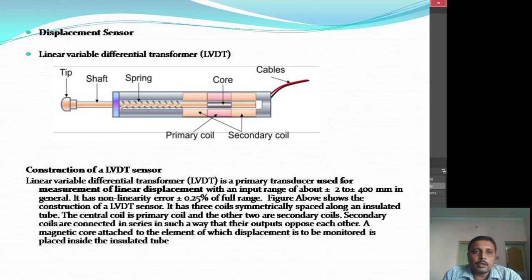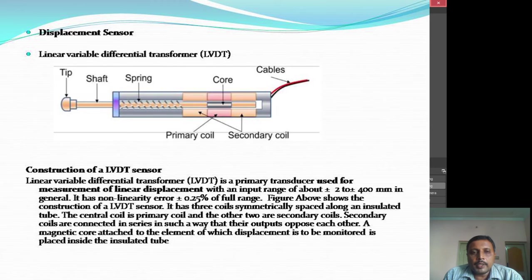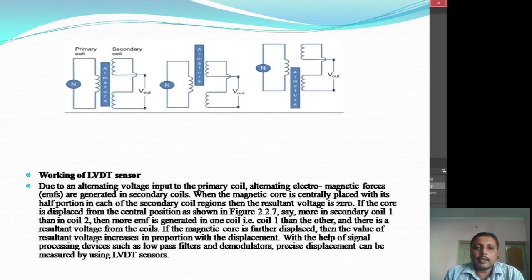The first displacement sensor is the LVDT, that is the Linear Variable Differential Transformer. Coming to the construction of an LVDT sensor, as you can see in the sketch there are two secondary coils and one primary coil placed inside an insulated tube. A central core is placed between the primary and secondary coils. It has three coils spaced along an insulated tube — the central coil is the primary coil and the other two are the secondary coils.